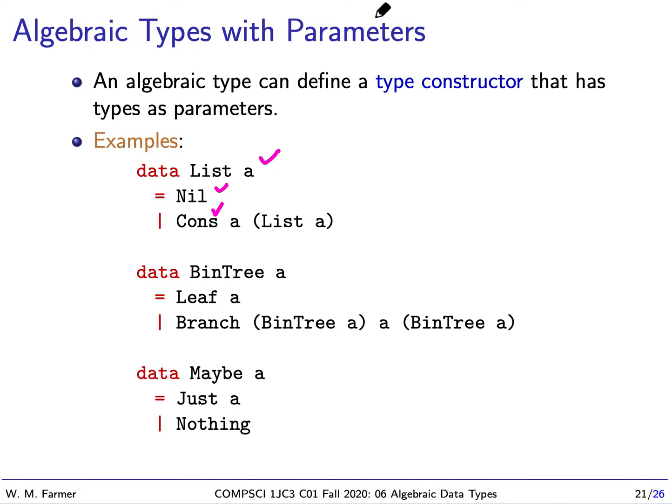So this is much more useful and general than the algebraic type we had before, which was just list of integer. If we wanted to have list of float, we would need another type list of float. This way, we don't need any of those. We just have one list with a parameter.